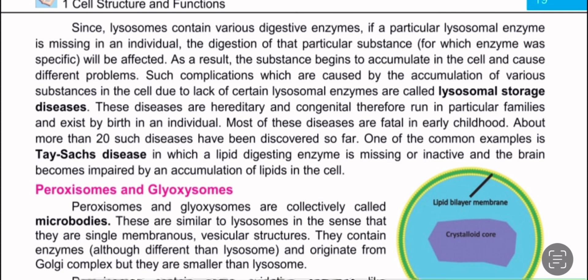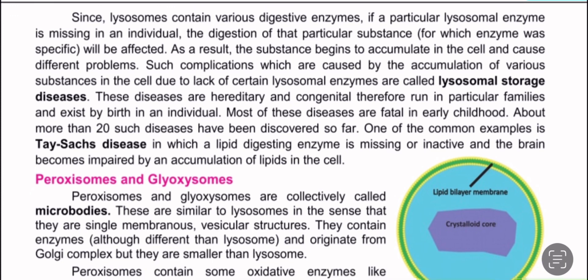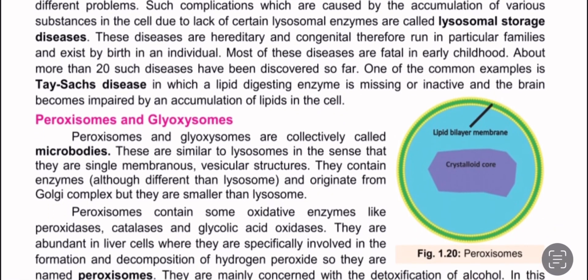One of the most common examples is Tay-Sachs disease, in which a lipid-digesting enzyme is missing or inactive and the brain becomes impaired by an accumulation of lipids in the cells.